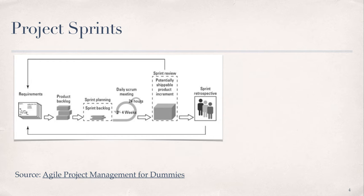Recall that the product backlog encompasses the complete set of user requirements included in the project charter, which are presented as user stories. The sprint backlog is the set of product backlog items that have been selected for the sprint, along with a plan for delivering the product increment in order to meet the sprint goal. The increment produced is the sum of the product backlog items completed during the sprint, building on the value of increments produced in all of the previous sprints.